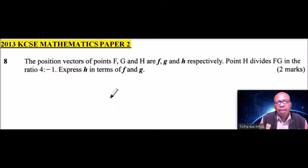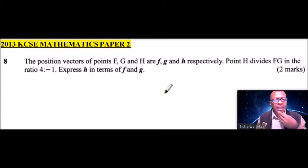Question number 8. The position vectors of F, G and H are f, g and h respectively. Point H divides FG in the ratio 4 is to minus 1. Express h in terms of f and g.